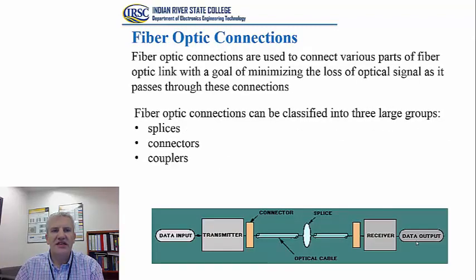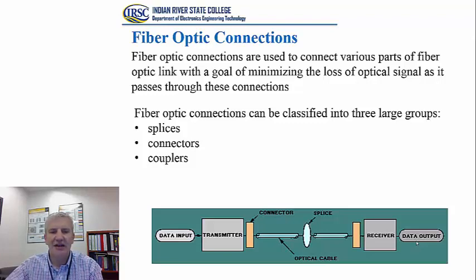Let's start talking about fiber optic connections. Fiber optic connections are used to establish a connection between the various parts of a fiber optic link. On this slide, a specific fiber optic link is shown. There are a few different types of connections that can be established on a fiber optic link, and they can be classified into three groups.